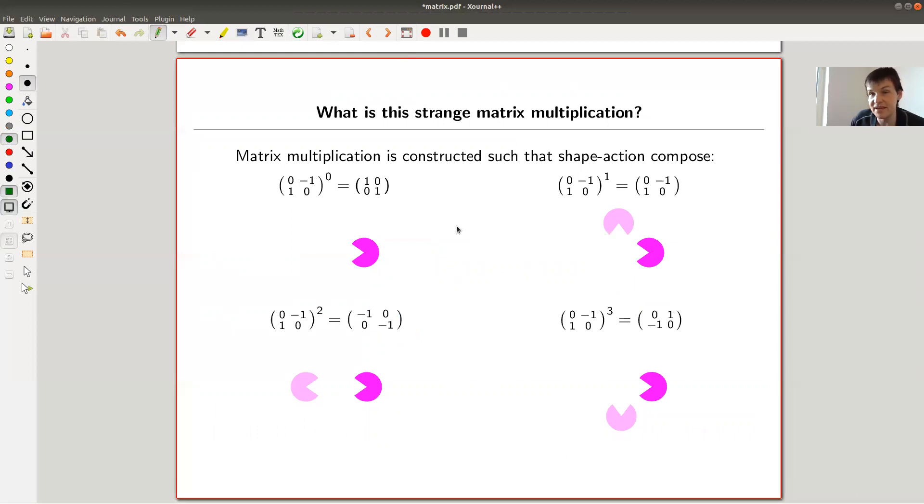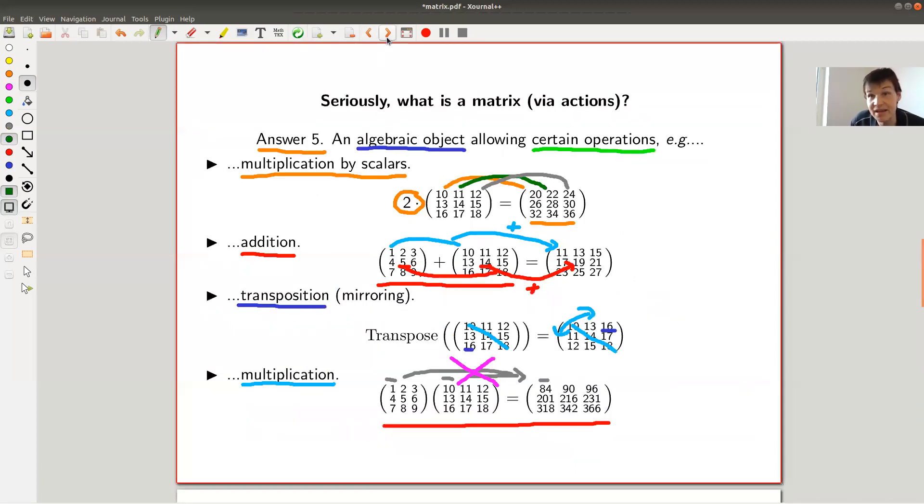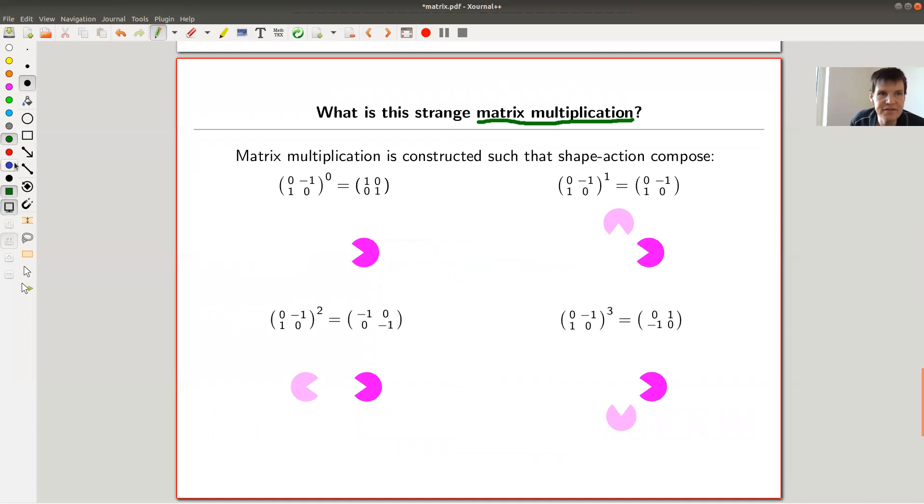Let me finish by telling you just a little bit about matrix multiplication. Again, this deserves an extra video. Basically this funny matrix multiplication, which I haven't explained too much, is to encode composition of operations. So I take this matrix from before and I just take powers of it. So zero power is I have a shape somewhere and I don't move it. And that's really the identity matrix.